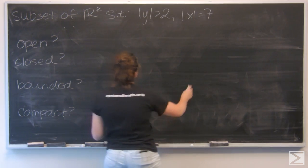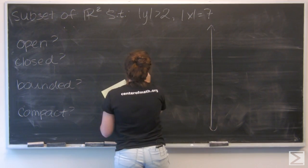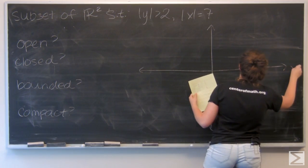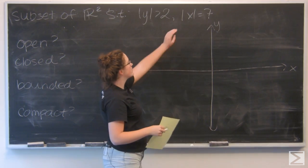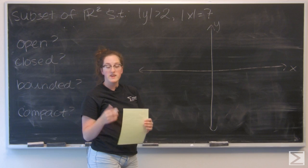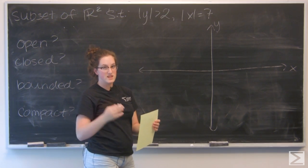I'm going to draw the xy-plane, and first let's take a look at the absolute value of x is equal to 7. That gives me two possible values for x: x equals positive 7 and x equals negative 7.